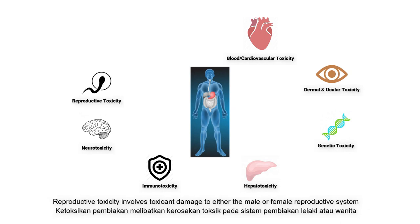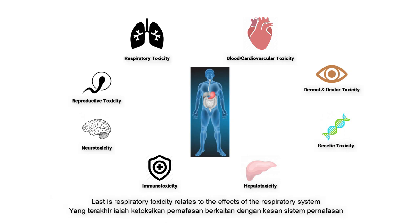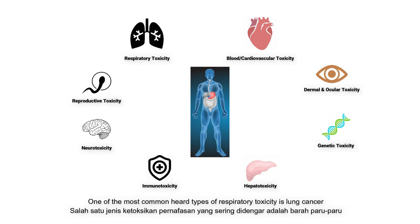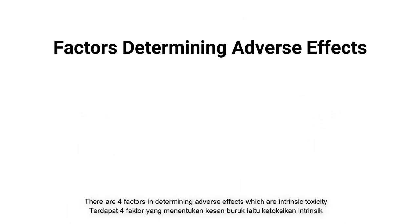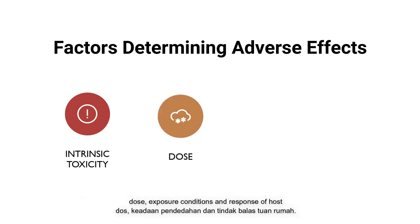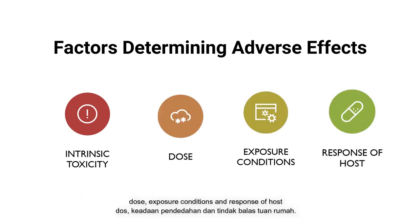Reproductive toxicity involves toxicant damage to either the male or female reproductive system. Respiratory toxicity relates to the effects on the respiratory system; one of the common types is lung cancer. There are four factors in determining adverse effects: intrinsic toxicity, dose, exposure conditions, and response of host.